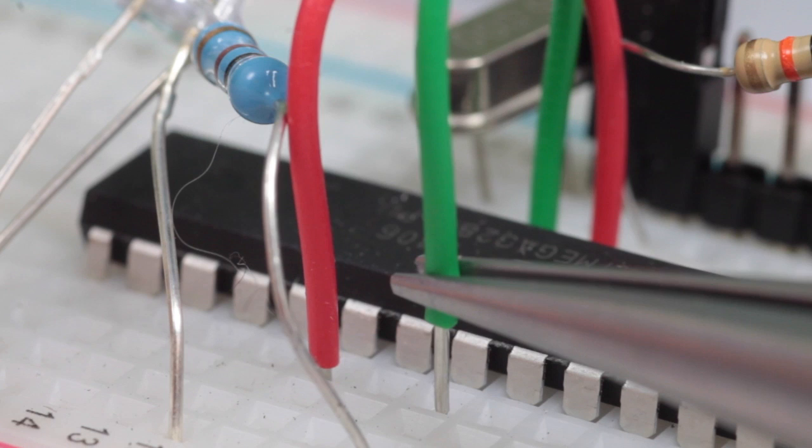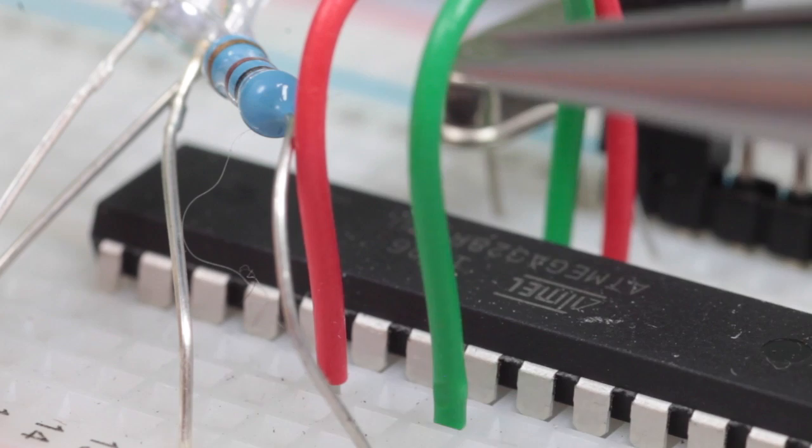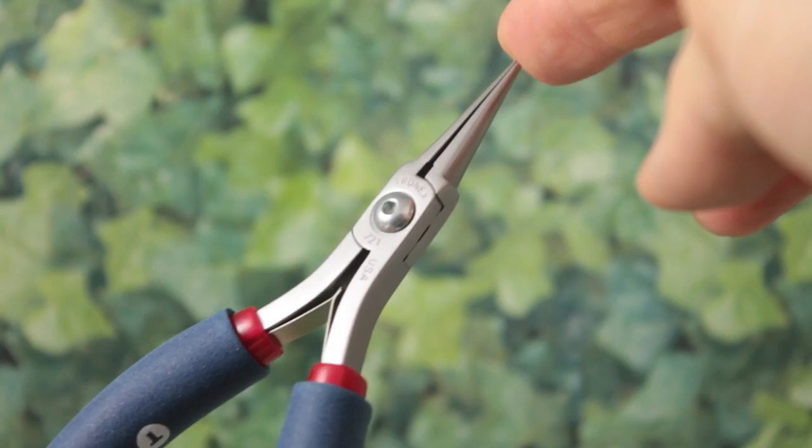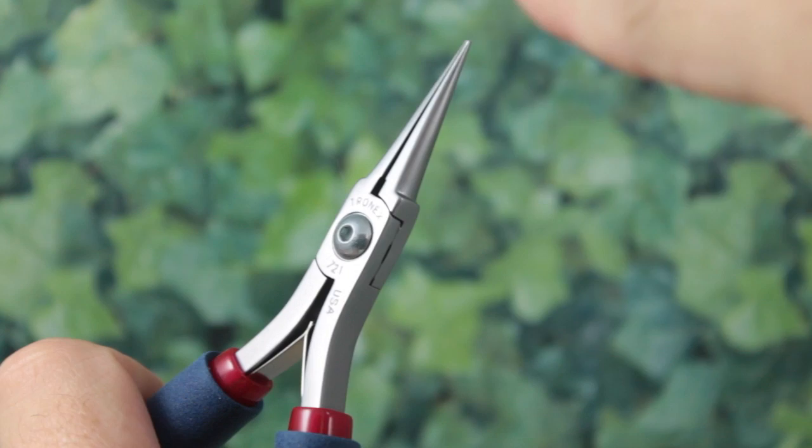So here we can see inserting some components into a breadboard. This is a little electronics project I was playing around with. So you can really see the usefulness and the benefits of these needle nose pliers, giving you the fine intricacy, but also the vision and the ability to see small components in tight spaces.